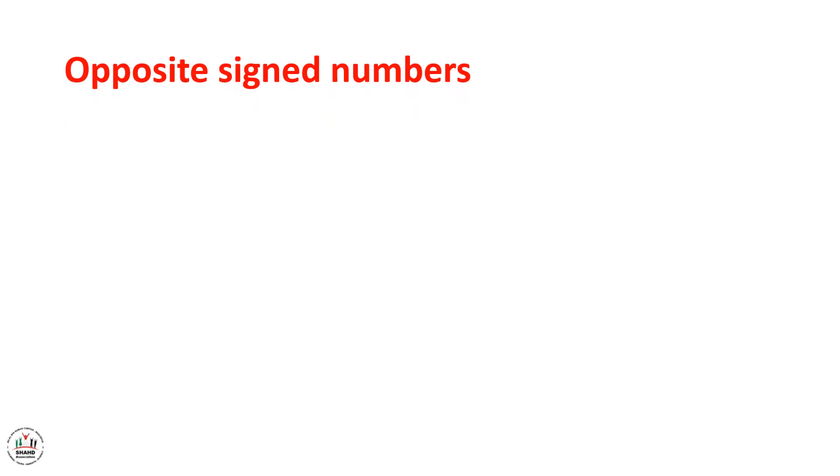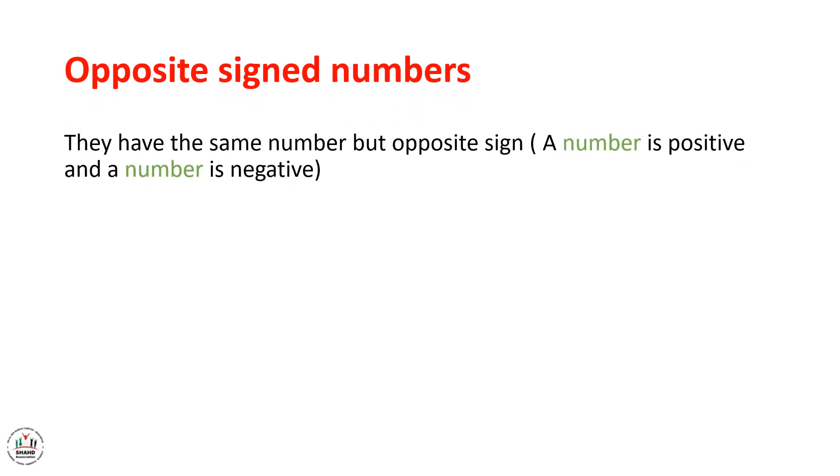Opposite signed numbers are the signed numbers that have the same number but opposite sign or different sign. Here we have an example. Plus 5 and minus 5. So they have the same number which is 5 but opposite or different signs. Plus and minus. Positive and negative.